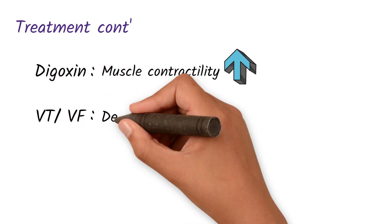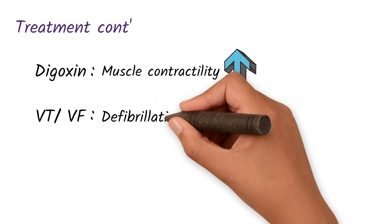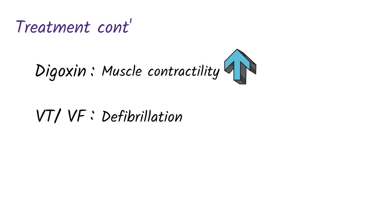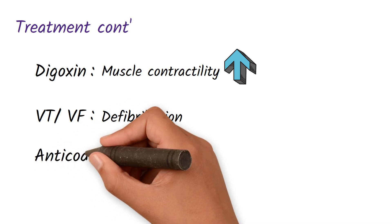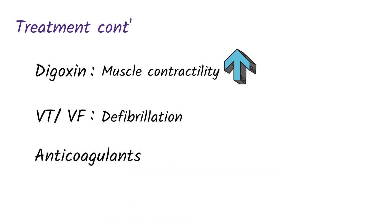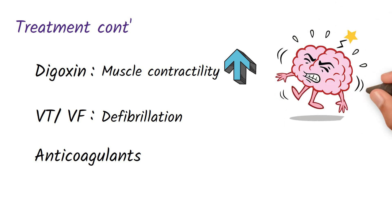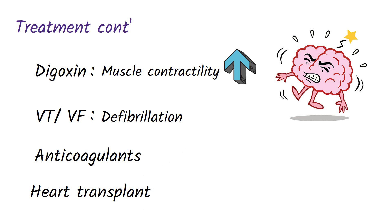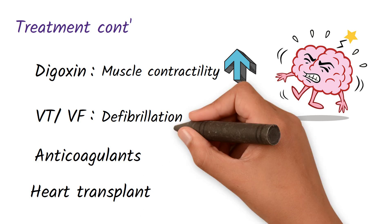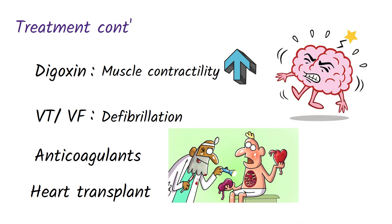If the patient has features of ventricular tachycardia or ventricular fibrillation, we have to defibrillate the patient. Because these patients have a risk of developing atrial fibrillation and atrial tachycardia, which increases the risk of embolus formation and stroke, we also give anticoagulants like warfarin. In refractory cases of dilated cardiomyopathy, the only option is a heart transplant.